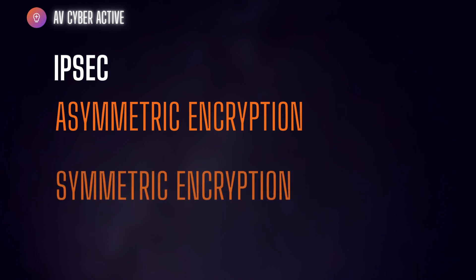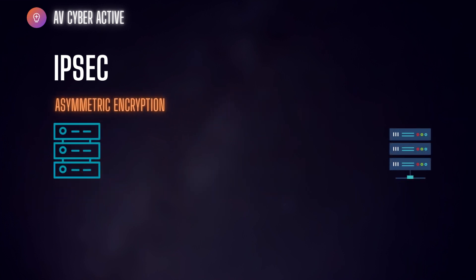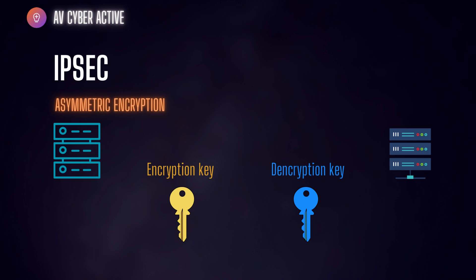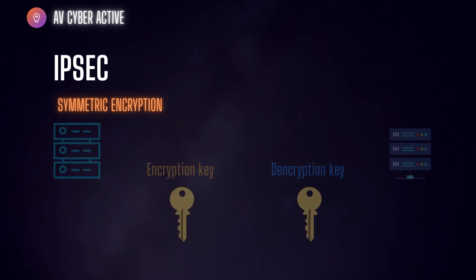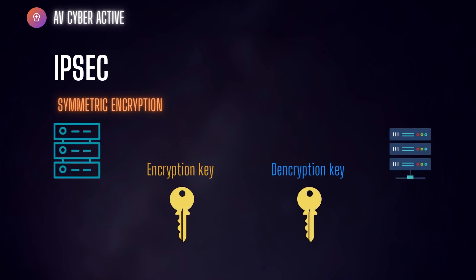IPsec uses both symmetric and asymmetric encryption to provide speed and security during data transfer. In asymmetric encryption, the encryption key is made of two key pairs — one is the public key used for encryption, while the private key is used for decryption. In symmetric encryption, the same key is used for both encrypting and decrypting the data. IPsec establishes a secure connection with asymmetric encryption and then switches to symmetric encryption to speed up data transfer.